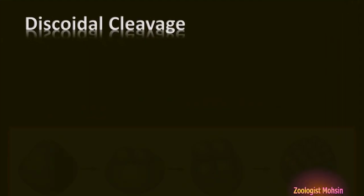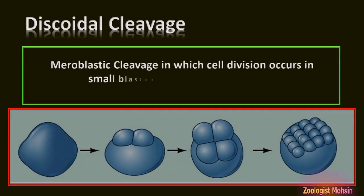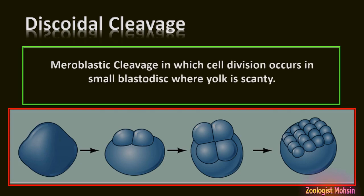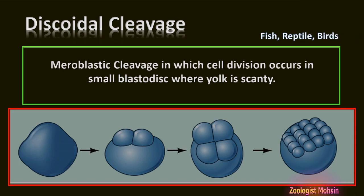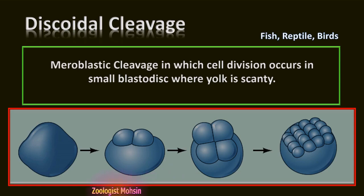Discoidal cleavage: This is a meroblastic cleavage in which cell division occurs only in a small blastodiscwhere yolk is scanty or absent. Fish, reptile, and bird eggs are telolecithal, having a large amount of yolk spread throughout the egg. So cleavage occurs only in a small portion, looking like a disc of cells on one periphery of the blastula. That is why this type is called discoidal cleavage.